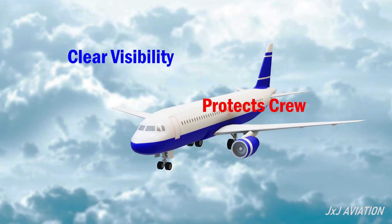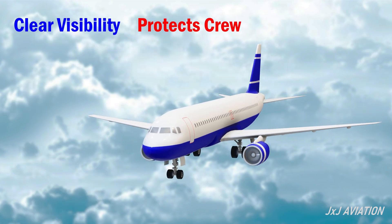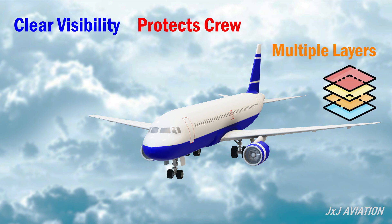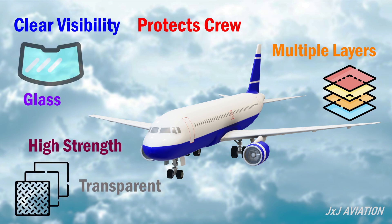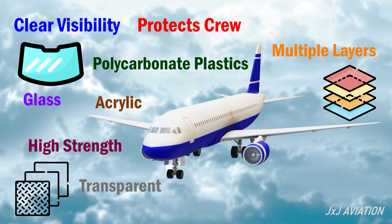For providing clear visibility and protection to the cockpit crew, the windshield consists of multiple layers. The layers consist of high-strength transparent materials. These materials could be a combination of glass, acrylic, and polycarbonate plastics.